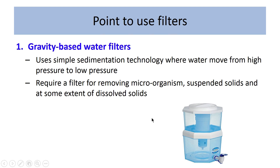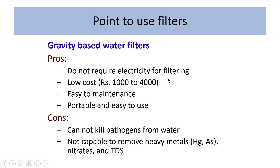The most commonly used gravity-based filters are biosand filters, which use a slow flow rate with a thin bacterial layer at the top that handles organic matter. After filtration the water can be disinfected with chlorine. Pros: no electricity required, low cost (₹1,000–4,000), easy to maintain, portable. Cons: cannot kill pathogens, not capable of removing heavy metals, arsenic, fluoride, nitrite, TDS, or industrial contaminants.